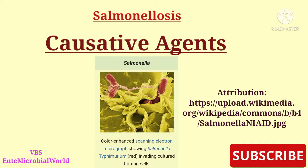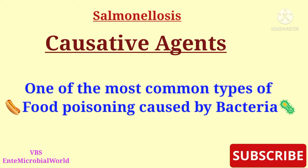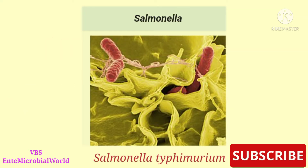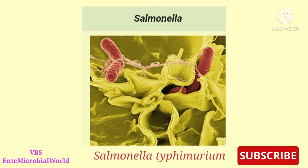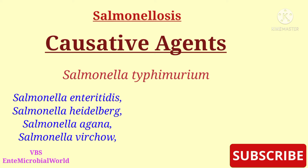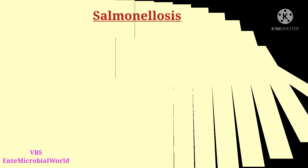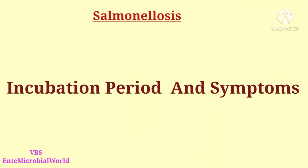Infectious agents like bacteria, viruses, parasites, or their toxins are the most common causes of foodborne diseases. Salmonellosis may be caused by any salmonella except salmonella typhi. It is one of the most common types of food poisoning caused by bacteria, and in most parts of the world salmonella typhimurium is the commonest species.